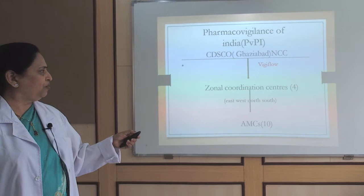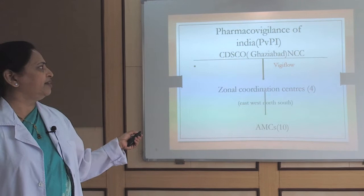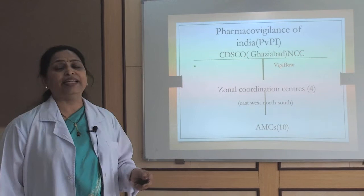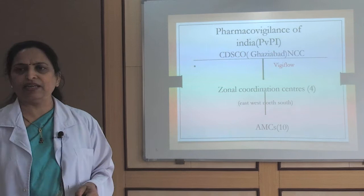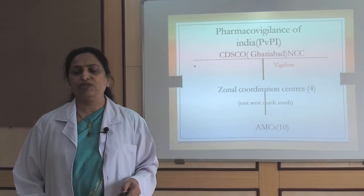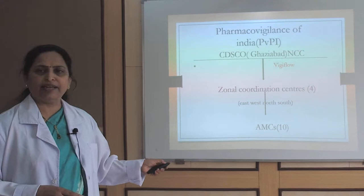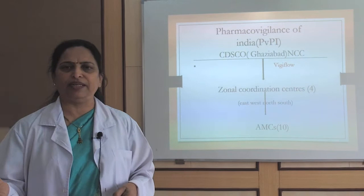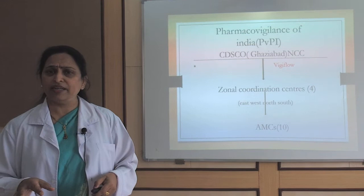For the pharmacovigilance system in India: at the head is the Pharmacovigilance Programme of India (PvPI). CDSCO (Central Drugs Standard Control Organisation) at Ghaziabad acts as the National Coordinating Centre (NCC). Under it are four zonal coordination centres (east, west, north, south), and each zone has peripheral ADR monitoring centres — for example, in the south/west zone: JJ Medical College, KEM, Nair Medical College, BJ Medical College, DY Patil Pimpri, and Miraj Medical College.